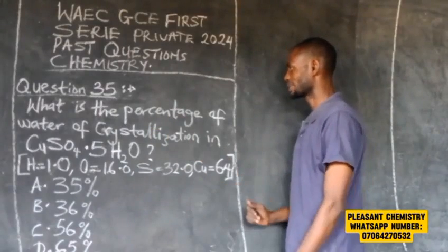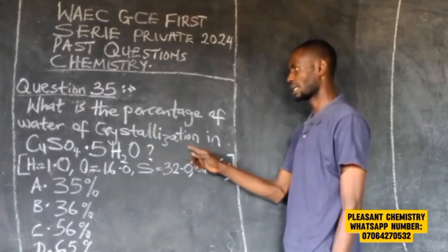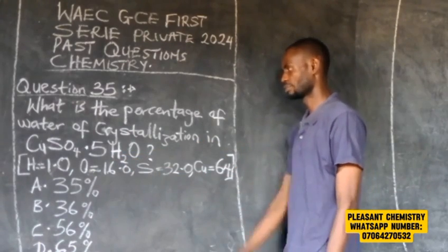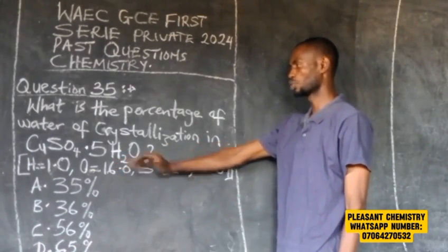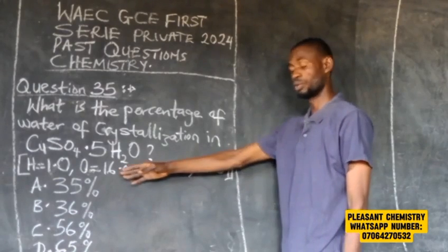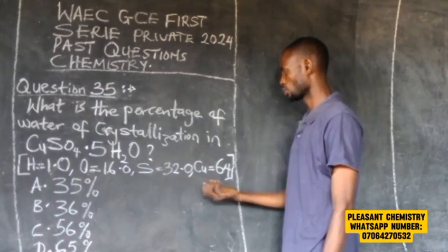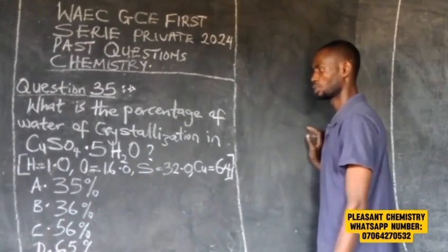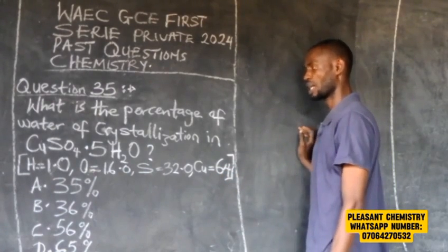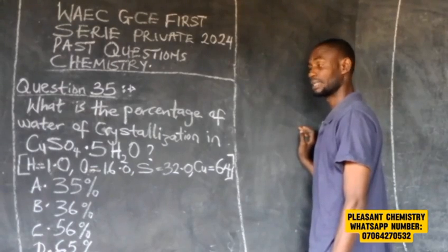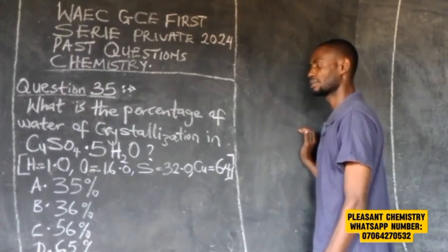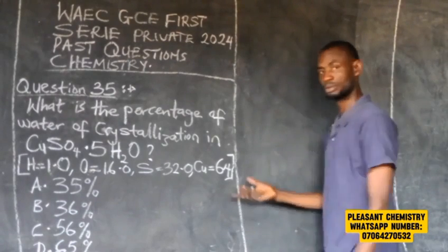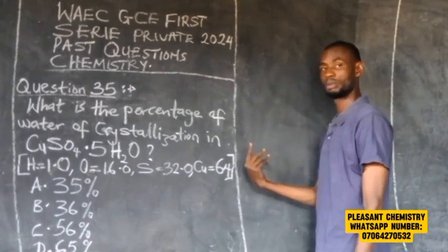Question number 35. What is the percentage of water of crystallization in CuSO₄·5H₂O? We are given atomic mass of hydrogen as 1, oxygen as 16, sulfur as 32, and copper as 64. The options are: A) 35%, B) 36%, C) 56%, and D) 65%.